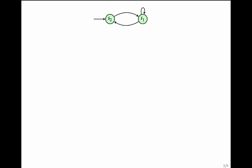Let us start with an example. This is a simple transition system. It has two states. S0 has a transition to S1, S1 has a transition to S0, and S1 also has a self-loop on S1. Let us call this state 0 and this state as state 1. So you can use one bit to represent two states.